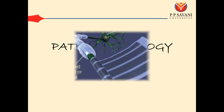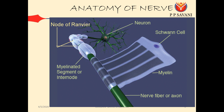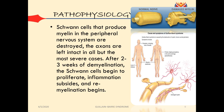Regarding pathophysiology: the Schwann cells that produce the myelin in the peripheral nervous system are destroyed. The axons are left intact in all but the most severe cases. After 2 to 3 weeks of demyelination, Schwann cells begin to re-proliferate, inflammation subsides, and remyelination begins. Initially, because of the infection there is inflammation, which causes damage to the Schwann cells and myelin sheath — this is termed demyelination.